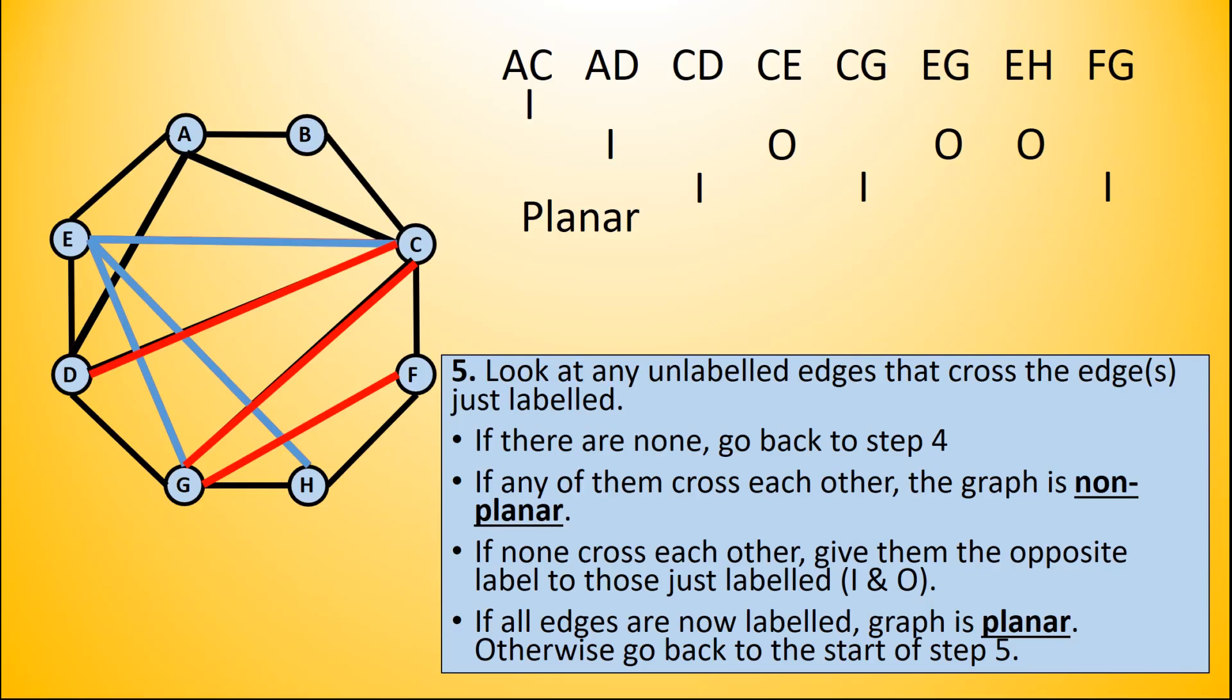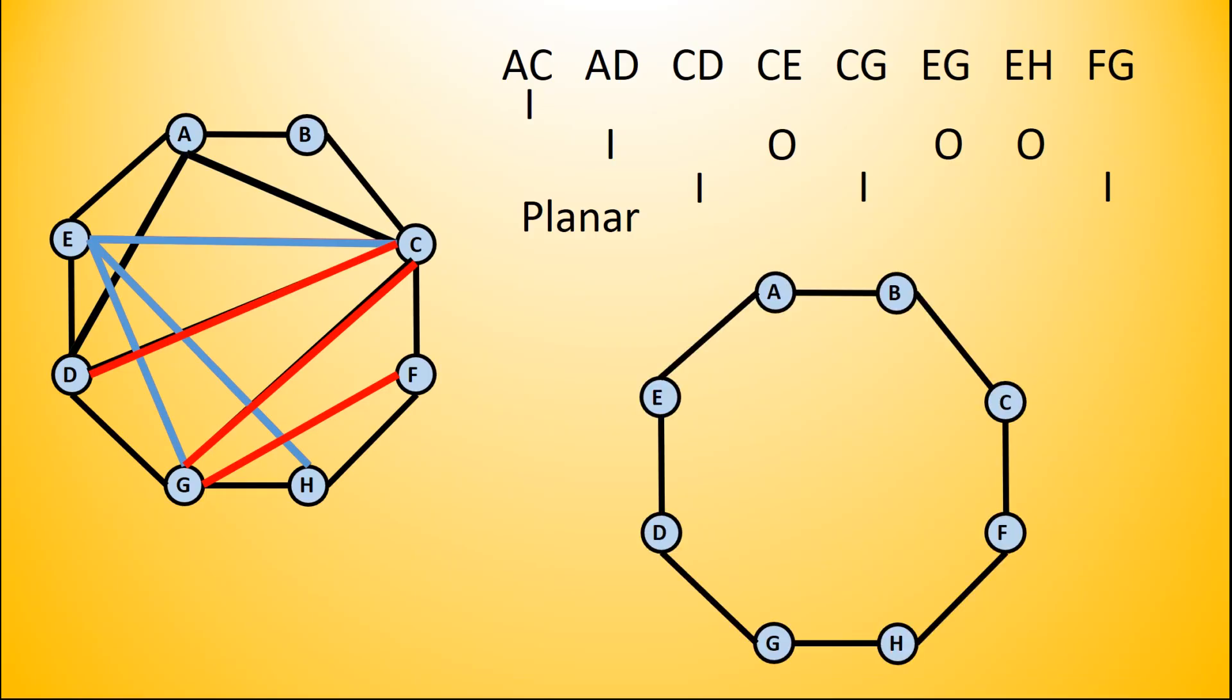All that remains now is to draw that planar graph. So first of all we draw the polygon of the edges that we originally had. Then we're going to draw the edges that go inside - that is, all of the edges that are labeled with an I. So we have AC, AD, CD, CG, and FG.